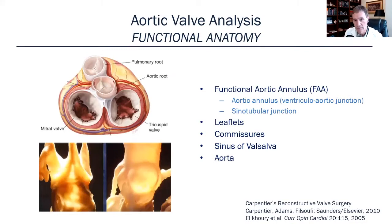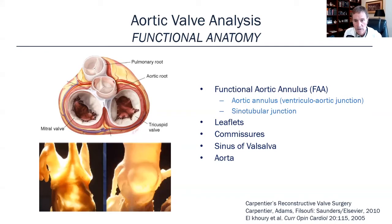Let's start with the aortic valve. We have to understand the functional anatomy before we can talk about ways to repair it. The functional aortic annulus includes the aortic annulus itself, which is the ventricular-aortic junction, plus through to the sinotubular junction above the coronaries. It includes the leaflets, the commissures, the sinus of Valsalva, and some aortic wall itself.